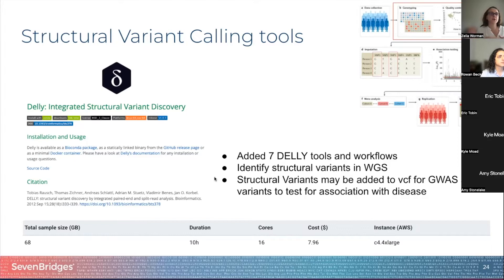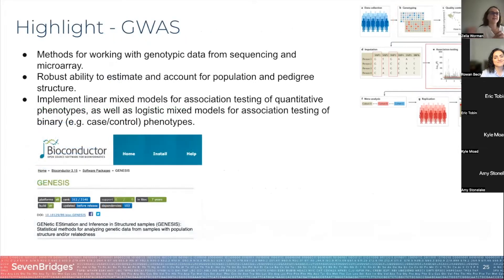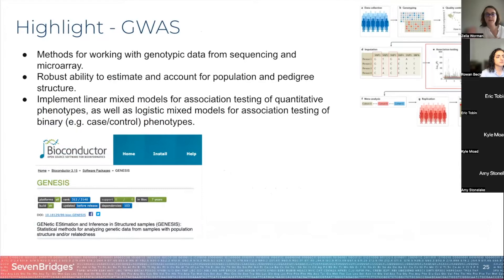The next step we'll show you is the association testing, step letter E. The tool we are going to work with today is GENESIS — Genetic Estimation and Inference in Structured Samples — developed by the Trans-Omics for Precision Medicine (TOPMed) Data Coordinating Center at the University of Washington.